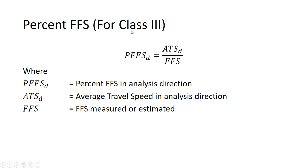For Class 3 roads, the service measure is the percent of free-flow speed (PFFS). This is simply the average travel speed divided by the free-flow speed — that ratio is how we judge how well the road is working for Class 3. If free-flow speed is 45 and you're only going half that, that's not good. We already have an equation to calculate average travel speed in the analysis direction, and free-flow speed can be measured or estimated.